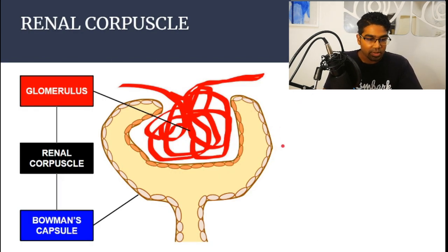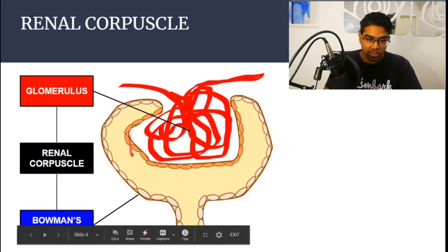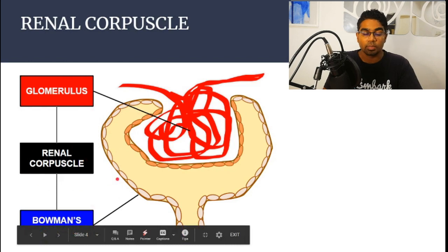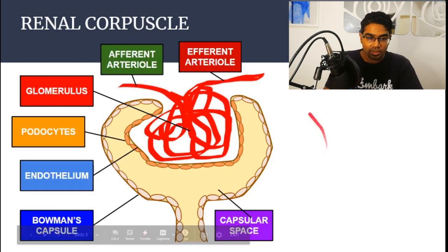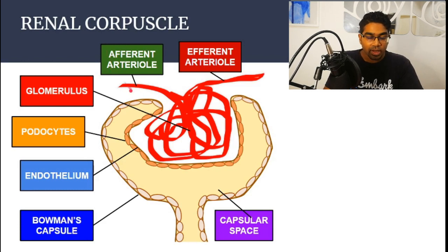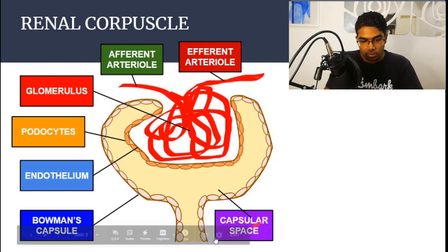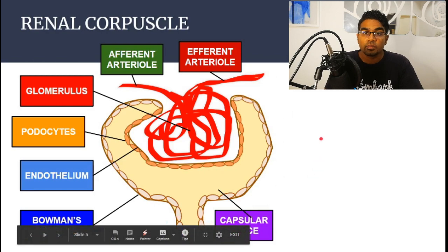Let's look at the details of Bowman's capsule. This structure that looks like a goblet is Bowman's capsule, and then inside here is the glomerulus. Together, they are called the renal corpuscle. This is known as the afferent arteriole, and this is the efferent arteriole. The afferent arteriole is where the blood comes in to the glomerulus. The glomerulus is actually just a bundle of blood capillaries. From the glomerulus, the blood goes out into the efferent arteriole, which will then go on to the next part of the nephron — the proximal convoluted tubule.